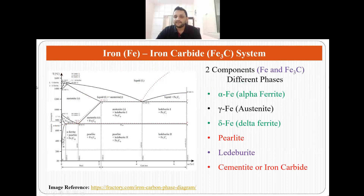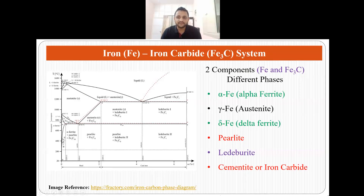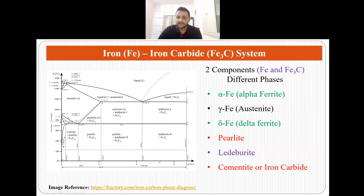This is how the iron-iron carbide system looks like. It has two components but it has different phases: alpha ferrite, austenite, delta ferrite, pearlite, ledeburite, and cementite or iron carbide. These phases occur at different temperature ranges and different carbon concentrations. This system has pure iron — 100% iron — on one side, and this is how we are adding carbon, so this axis is the concentration of carbon, this is the temperature, and these are the different phases formed.